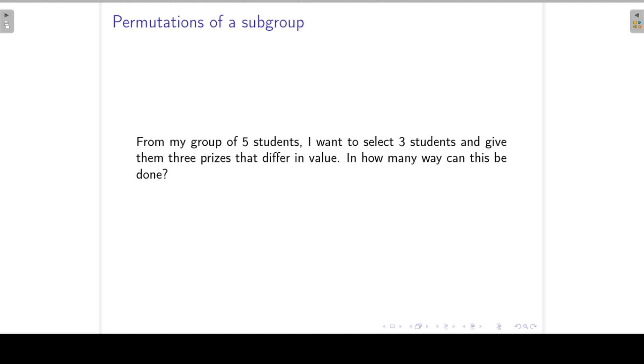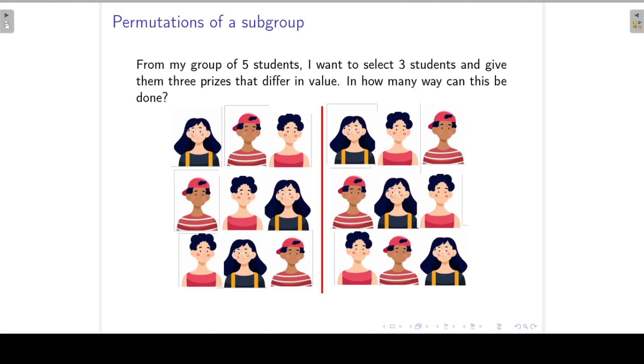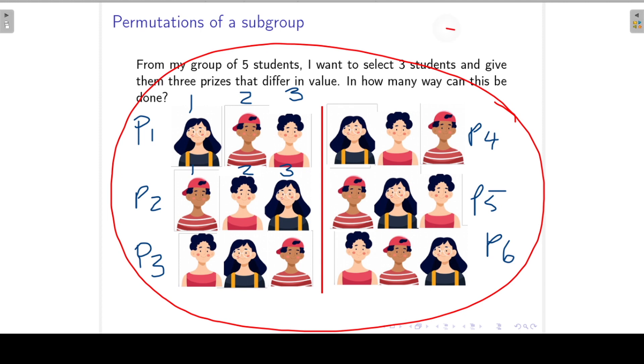Now from my group of 5 students, I want to select 3 students and give them 3 prizes that differ in value. In how many ways can this be done? Now if we look at the 3 students in our first sample, Anne, Adam and Adele, if I give the first prize to Anne, the second prize to Adam and the third prize to Adele, then that would be different than to give the first prize to Adam, the second prize to Adele and the third prize to Anne. So we will call this six different permutations. Although it's the same three students, so we consider these students as one sample, but if the order of these three students are important, we will call them permutations and there are six different permutations of the same three students.